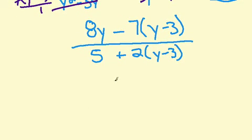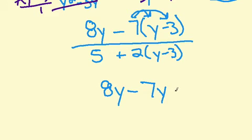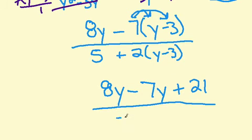Now we can simplify just a little bit more. Distribute into the parentheses. 7 times y, and negative 7 times negative 3 gives us positive 21, all over 5. And we distribute 2y minus 6.